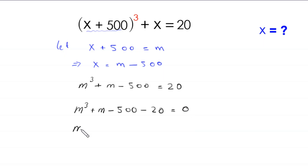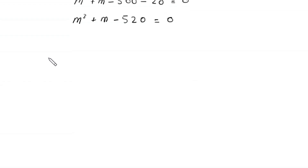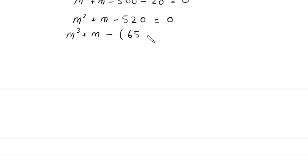Simplifying, -500 - 20 becomes -520, so we have m³ + m - 520 = 0. Next, we note that 520 is the same as 65 × 8.